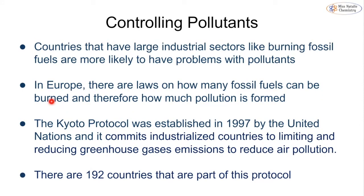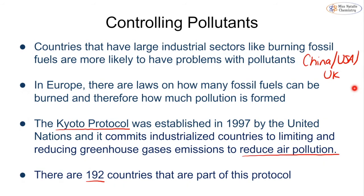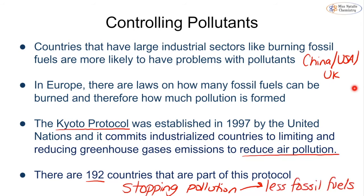Countries with large industrial processes or lots of factories burning fossil fuels will have problems with pollutants — the most common examples are China, the USA, and the UK can be quite bad too. In Europe there are laws about how many fossil fuels can be burned. In 1997 the Kyoto Protocol was established by the United Nations — an agreement for countries burning fossil fuels to reduce their use and reduce air pollution. There are 192 countries that are part of this protocol. You can read more about it online.